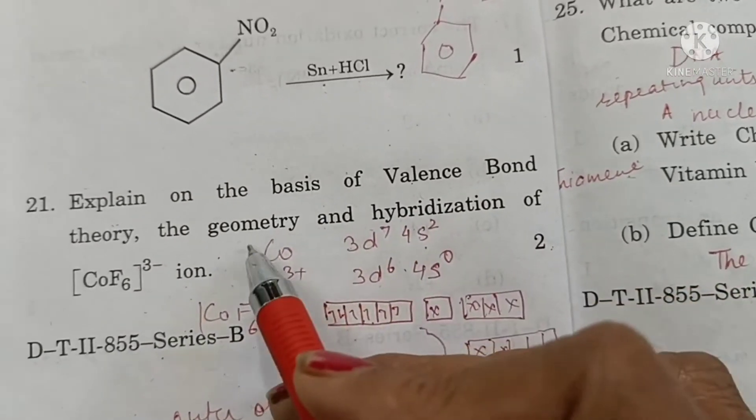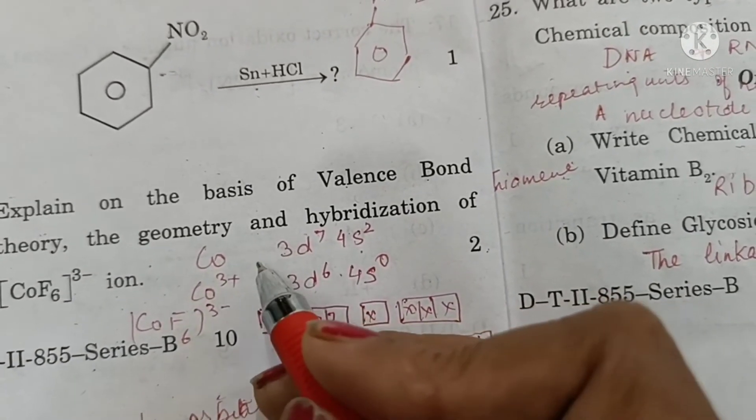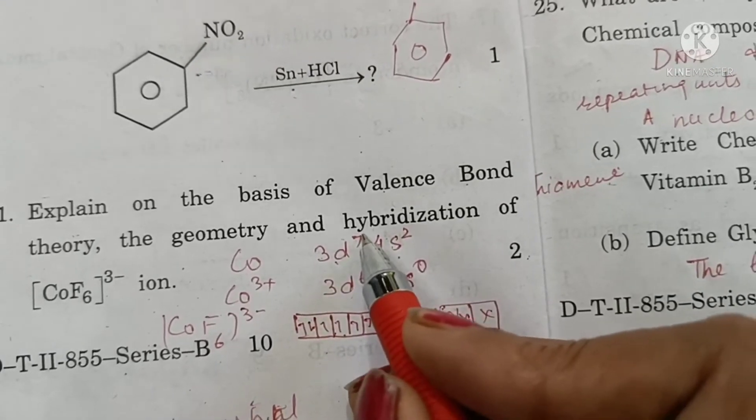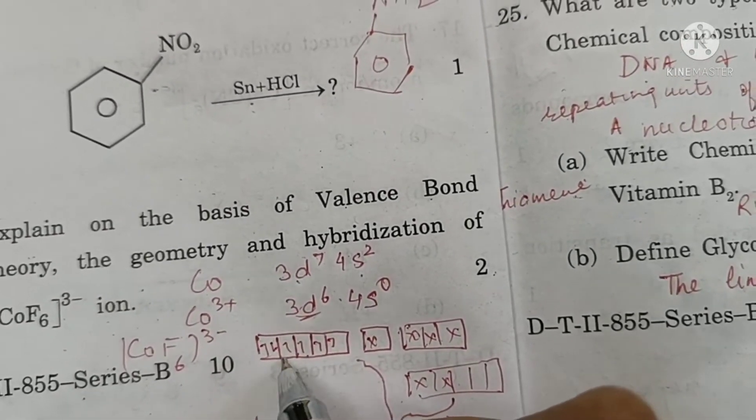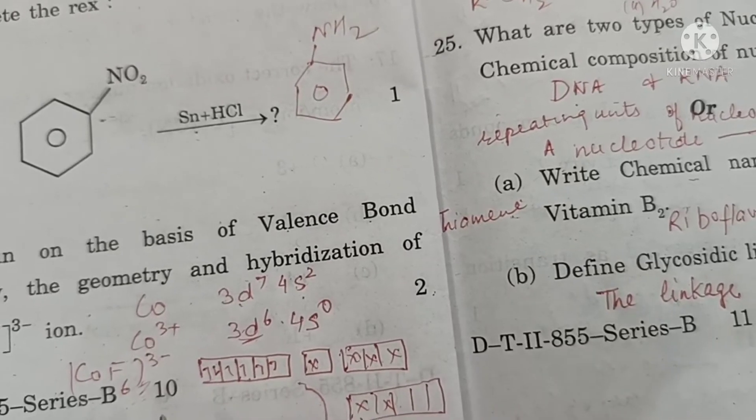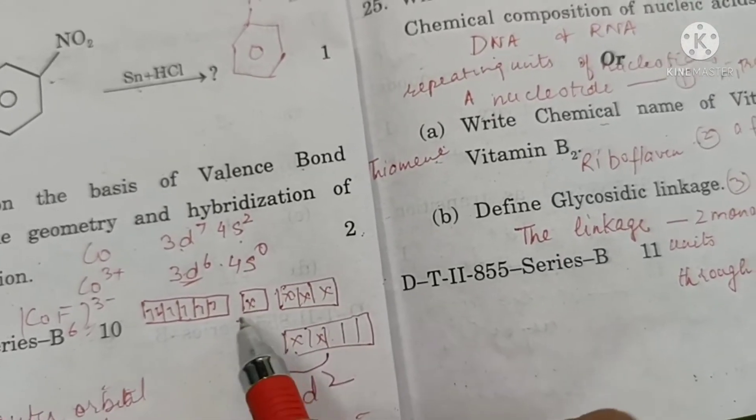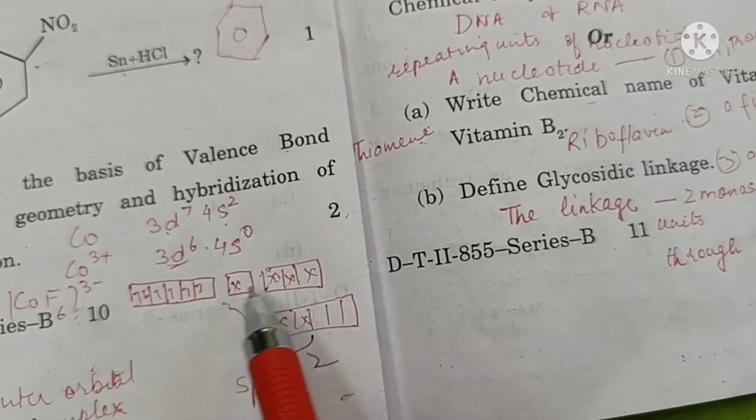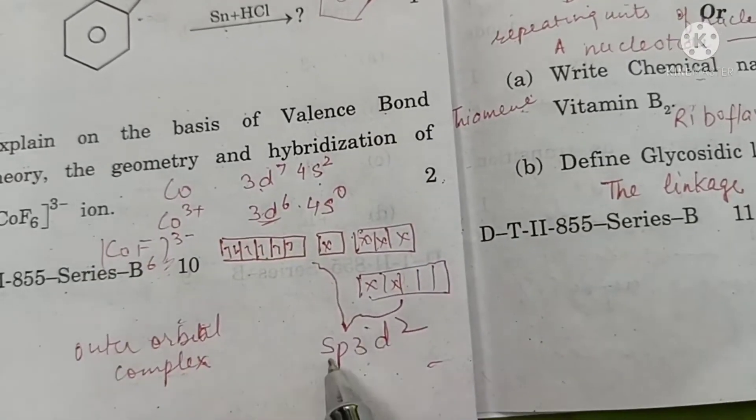Explain on the basis of valence bond theory the geometry and hybridization of hexafluorido-cobaltate ion. Cobalt atomic number 27 has configuration argon-18, 3d7 4s2. When it forms 3 positive ion, 2 plus 1, 3 electrons will be lost. Configuration is reduced to 3d6. Because it is found that it is a paramagnetic compound and fluoride ions are weak field ligands, outer d orbitals are involved in hybridization and sp3d2 hybridization occurs. The 6 fluoride donate a pair of electrons each in these sp3d2 hybrid orbitals to form an octahedral compound. Geometry is octahedral and hybridization is sp3d2.